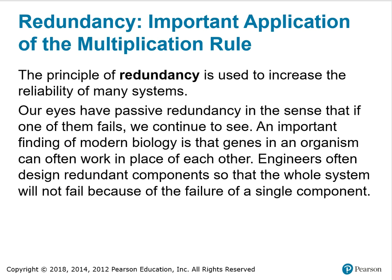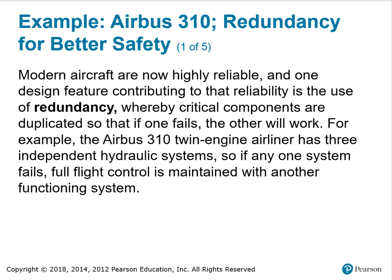Redundancy: the principle of redundancy is used to increase the reliability of many systems. Our eyes have passive redundancy in the sense that if one of them fails we continue to see. An important finding of modern biology is that genes in an organism can often work in place of each other. Engineers often design redundant components so that the whole system will not fail because of the failure of a single component. Modern aircraft are now highly reliable, and one design feature contributing to that reliability is the use of redundancy, whereby critical components are duplicated so that if one fails the other will work. For example, the Airbus 310 twin-engine airliner has three independent hydraulic systems, so if any one system fails, full flight control is maintained with another functioning system.